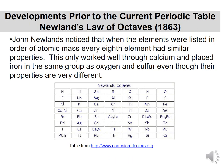Just a year later, John Newlands noticed that elements actually work in octaves — that if you line them up according to atomic mass, every eighth element will have similar properties. If you look at the periodic table today, you'll find fluorine, chlorine, bromine, and iodine are all in the same group. They all have similar properties, so it's getting more organized as we move along.